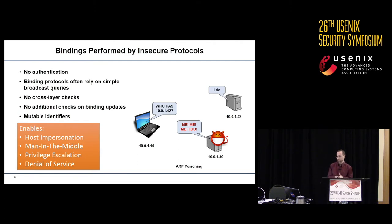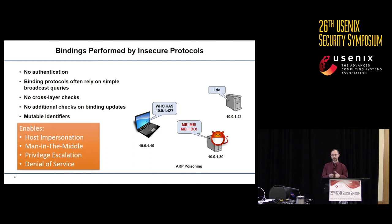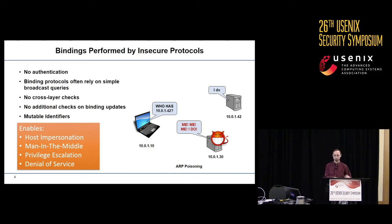Additionally, these binding protocols perform no kind of cross-layer checks to ensure that bad low-level identifiers aren't used to change high-level bindings. There are also no checks when bindings are updated that the old binding is no longer valid. All of this enables host impersonation, man-in-the-middle attacks, privilege escalation by pretending to be a more privileged host in the network, and denial of service by black-holing or misrouting traffic.